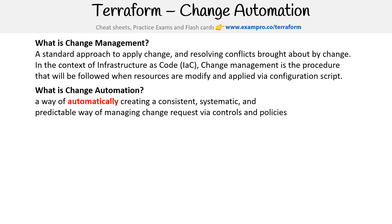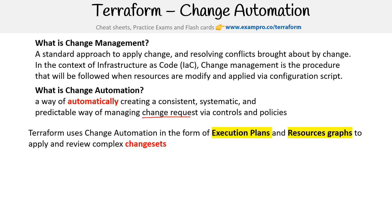So what is change automation? It is a way of automatically creating a consistent, systematic, and predictable way of managing change requests via controls and policies. Note that the emphasis here is on change requests — saying 'I'm going to change these resources.'